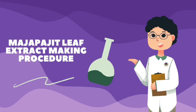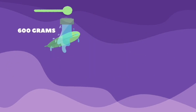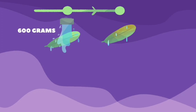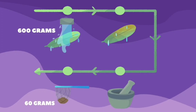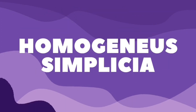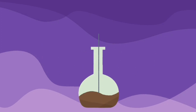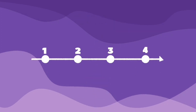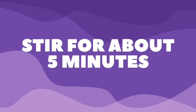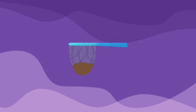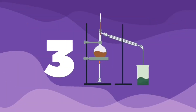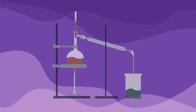The procedure for making Majapite leaf extract goes through three stages. First, making simplicia begins with washing the leaves of Majapite using running water, drained and dried, then ground and filtered to get a homogeneous simplicia. After that, the maceration process: simplicia and 96% ethanol were mixed in a ratio of 1 to 10, then stirred for 5 minutes, soaked for 4 days with daily stirring for 5 minutes, then filtered after 4 days. Lastly, the distillation process is carried out by evaporating the filtrate until a thick extract of Majapite leaf is obtained.